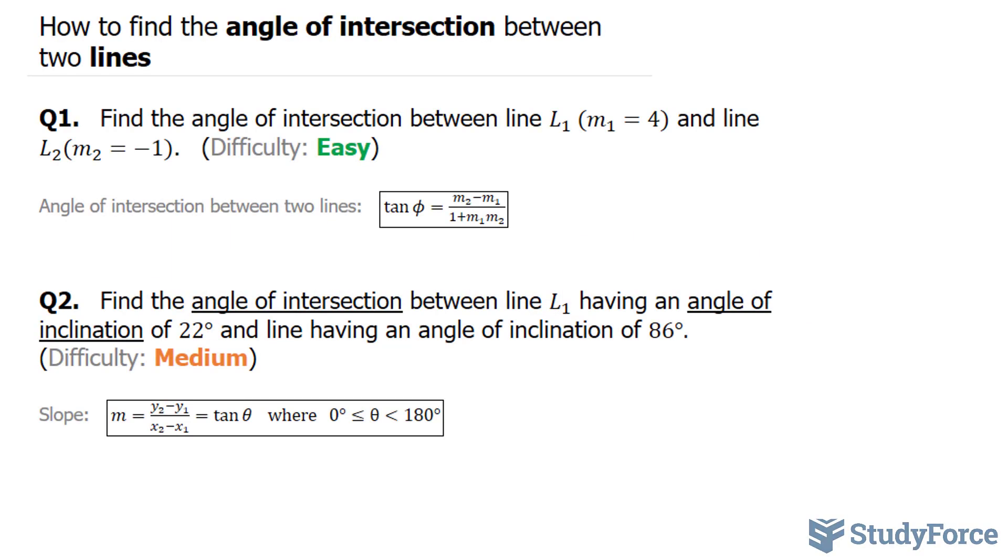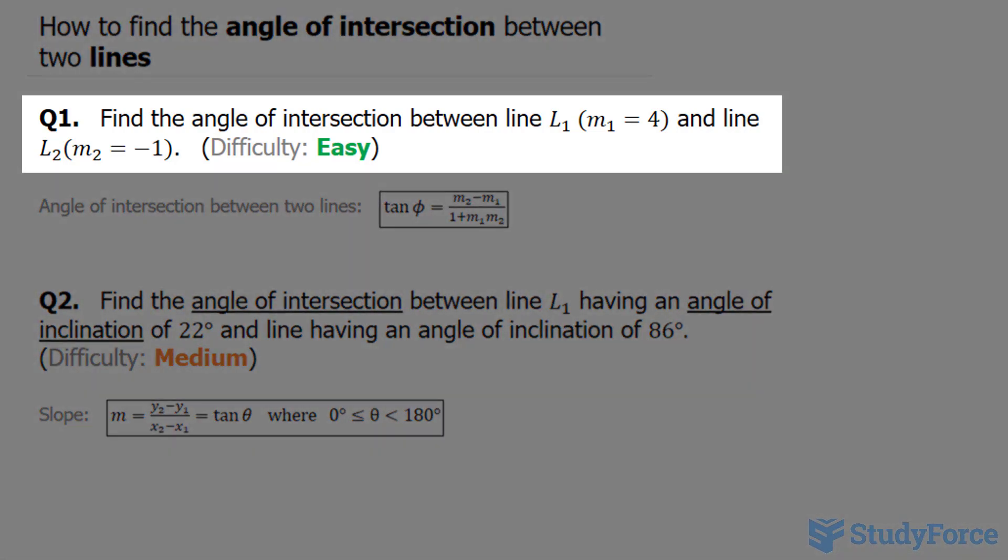In this video, I'll show you how to find the angle of intersection between two lines. Question one reads, find the angle of intersection between line one, which has a slope of four, and line two, which has a slope of negative one.